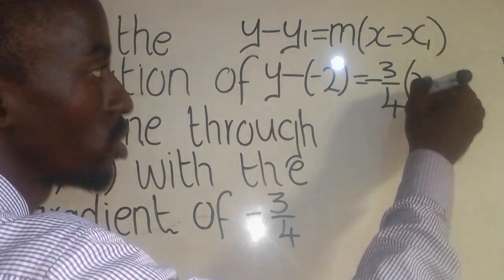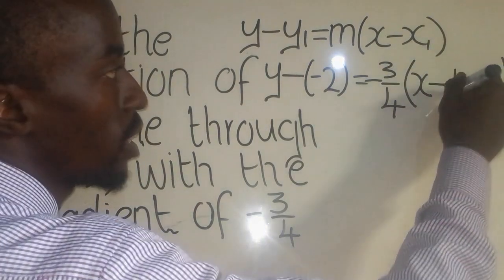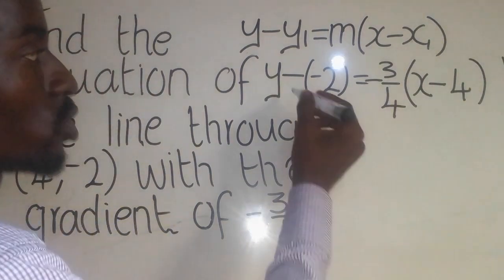What is x? We don't know. We put x minus. What is x1? x1 is 4. So here, you put 4 like that.